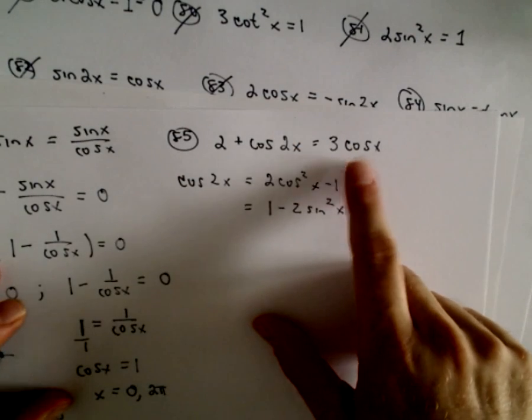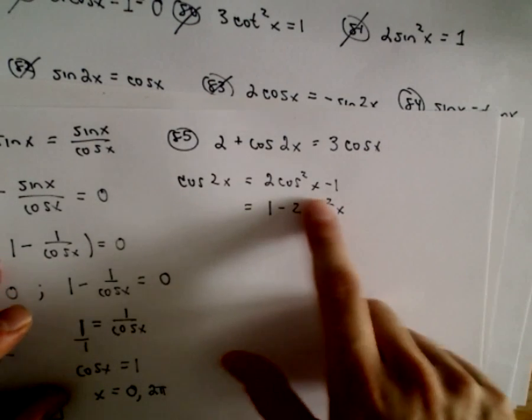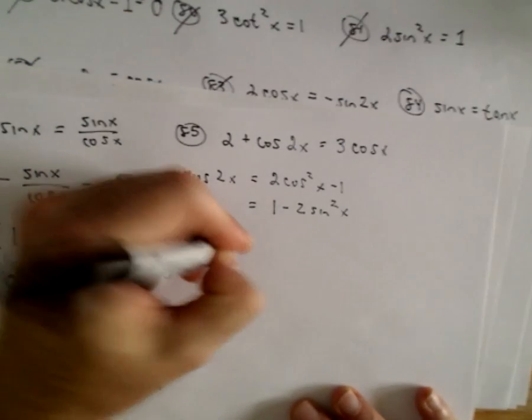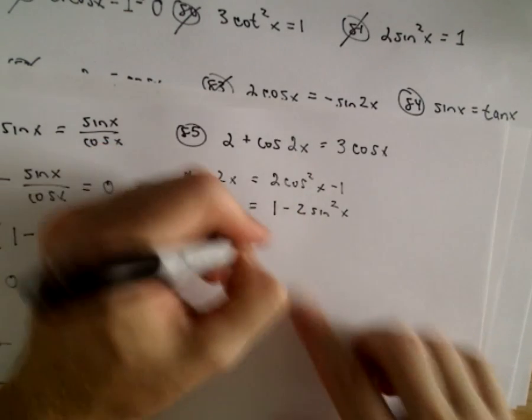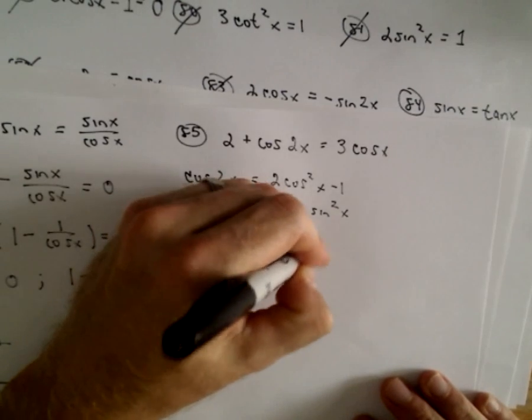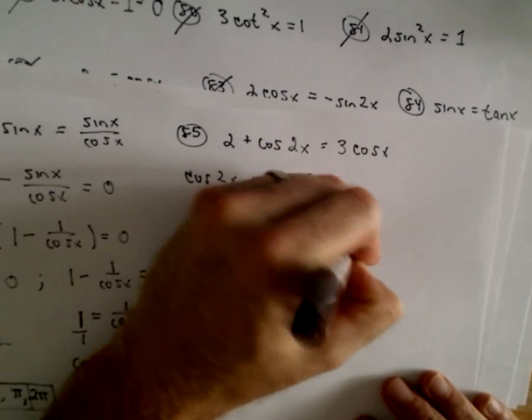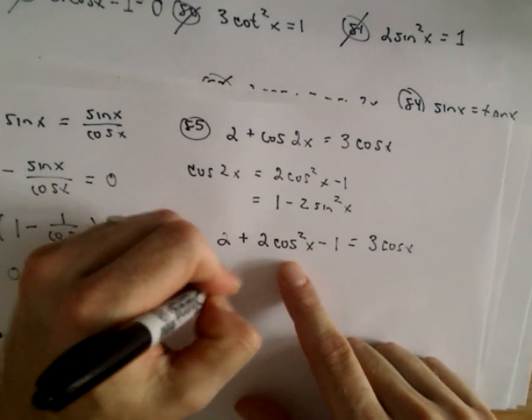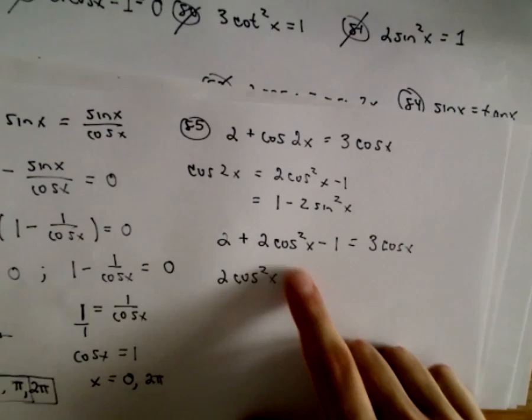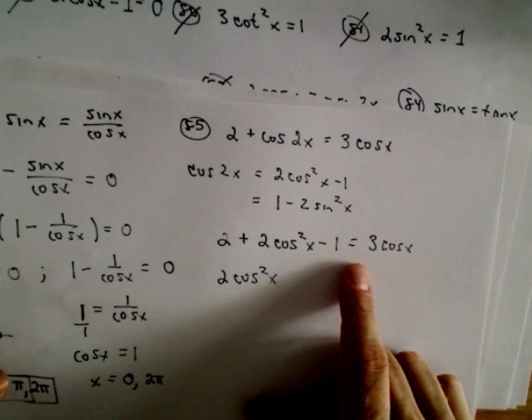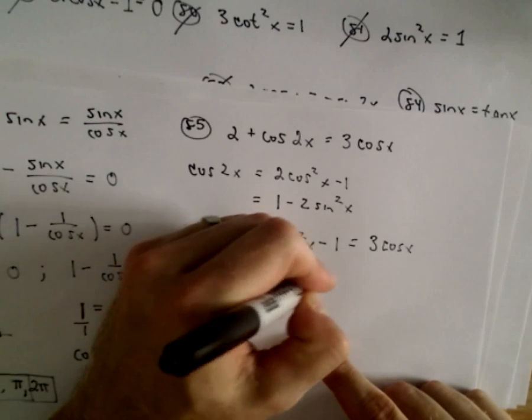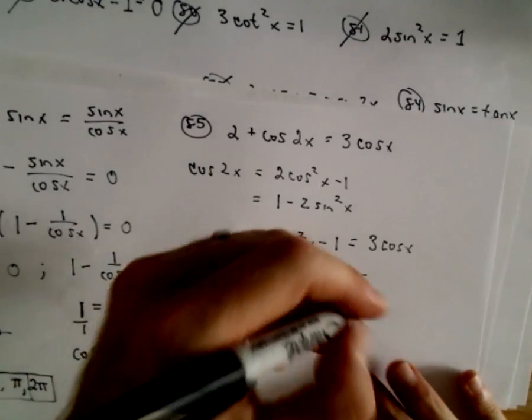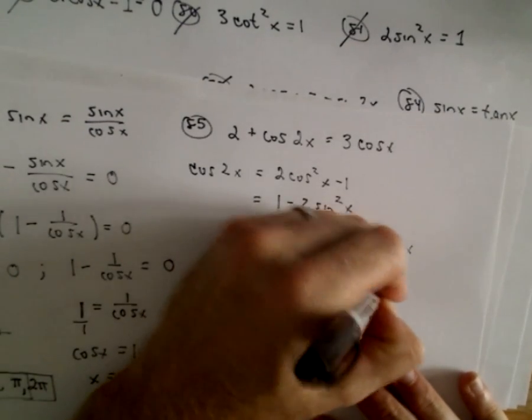Since my term on the right side involves cosine x, I'm going to use the identity that also involves cosine. So I'm going to have 2 plus, well instead of cosine 2x, I'm going to have 2 times cosine squared x minus 1. That equals 3 times cosine x. All right, so I'm going to make the right side of my equation equal to 0 so I'm going to subtract 3 cosine x from both sides and then we have 2 minus 1 which will give us positive 1. We've got 0 on the right side and hopefully this factors.